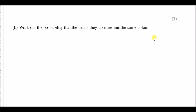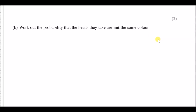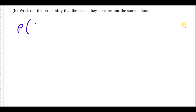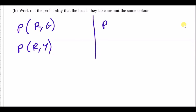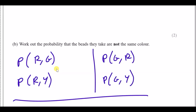For 16b: work out the probability that the beads they take are not the same colour. This is a combinations question — we need to think about all different combinations. The colours are red, green, and yellow. You could take red then green, red then yellow, green then red, green then yellow, yellow then red, or yellow then green — six combinations in total. Since red-green and green-red are essentially paired, you can work out three of them and then double your answer.